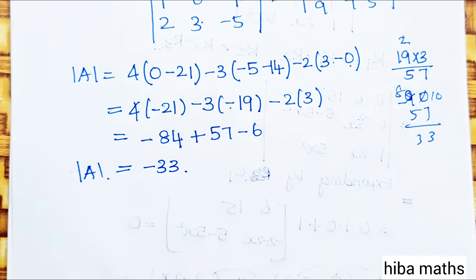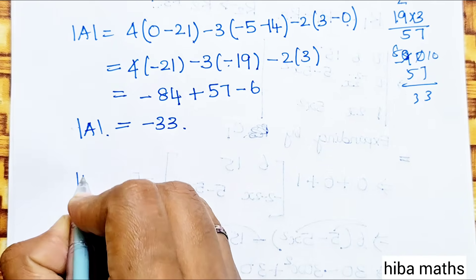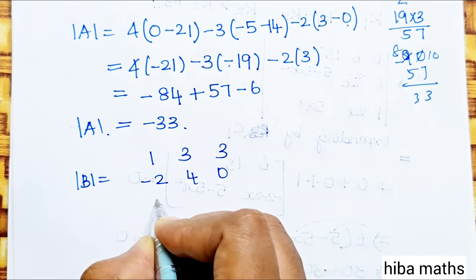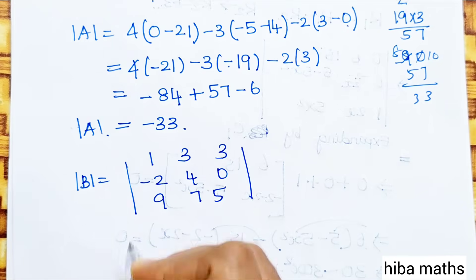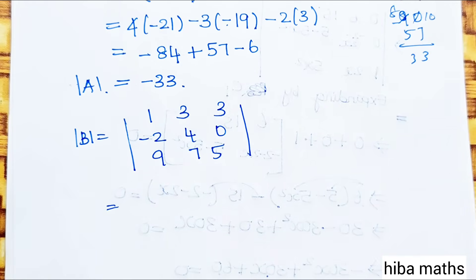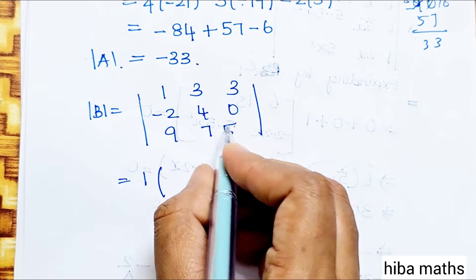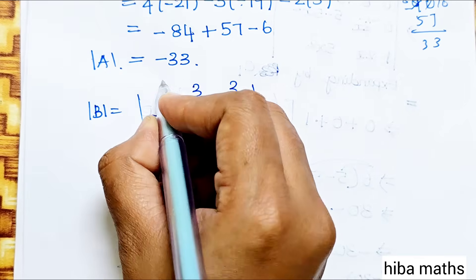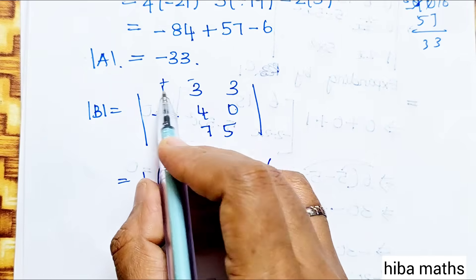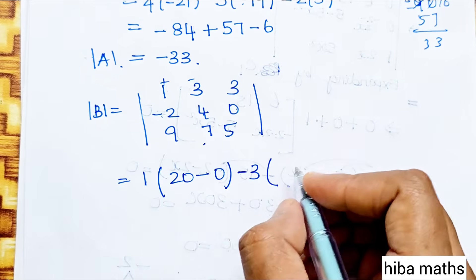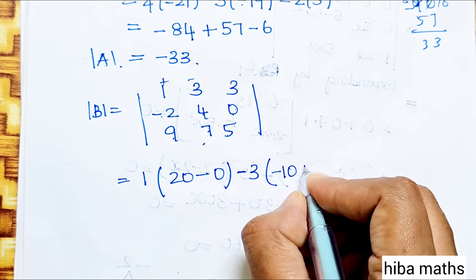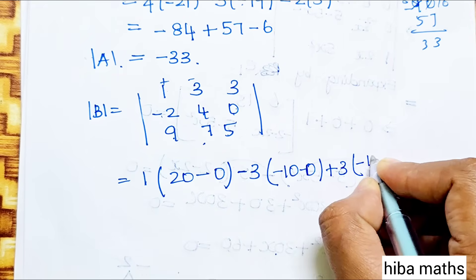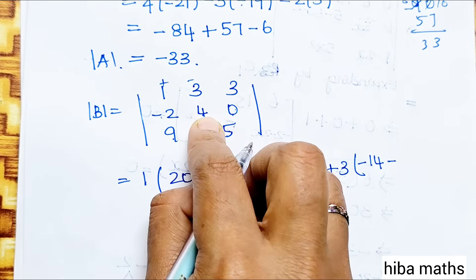Next find det(B) for matrix B = [[1,3,3],[−2,4,0],[9,7,5]]. Expanding first row: 1×(4×5 − 0×7) = 1×20 = 20. Minus 3×(−2×5 − 0×9) = −3×(−10) = 30. Plus 3×(−2×7 − 4×9) = 3×(−14 − 36) = 3×(−50) = −150. Wait, checking: 3×(−14−36) = 3×(−50). So det(B) = 20 + 30 − 150 = −100.